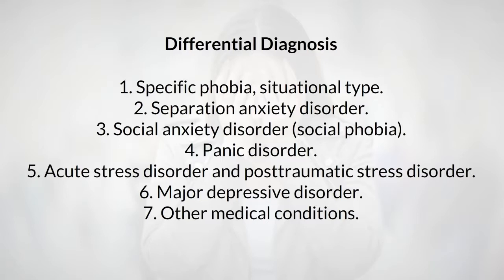Separation anxiety disorder can be best differentiated from agoraphobia by examining cognitive ideation. In separation anxiety disorder, the thoughts are about detachment from significant others and the home environment, i.e., parents or other attachment figures, whereas in agoraphobia the focus is on panic-like or other incapacitating or embarrassing symptoms in the feared situations. Agoraphobia should be differentiated from social anxiety disorder based primarily on the situational clusters that trigger fear, anxiety, or avoidance and the cognitive ideation. In social anxiety disorder, the focus is on fear of being negatively evaluated.